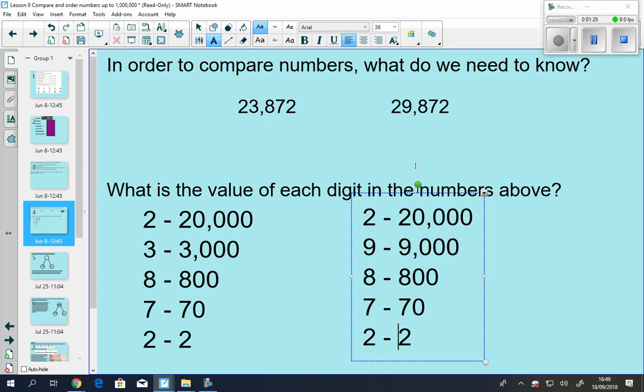So if I asked you to tell me how you know that one number is larger than the other, you could tell me that in the second number here, we have a 9 in the thousands column, and we have a 3 in the thousands column of the other number. Therefore, 29,872 is larger because it's got a 9 in the thousands column where the other number has a 3, and all of the other digits are the same.